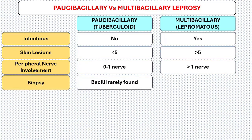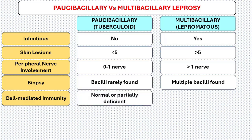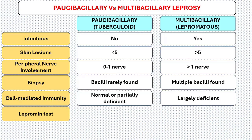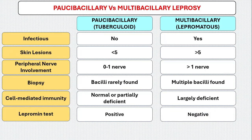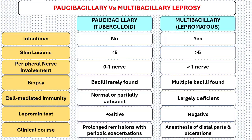On biopsy, bacilli are not found in paucibacillary, whereas multiple bacilli are found in multibacillary. Cell-mediated immunity is normal or partially deficient in paucibacillary, and largely deficient in multibacillary. Lepromin test is positive in paucibacillary and negative in multibacillary. Clinical course: there are prolonged remissions with periodic exacerbations in paucibacillary, whereas anesthesia of distal parts and ulcerations occur in multibacillary.